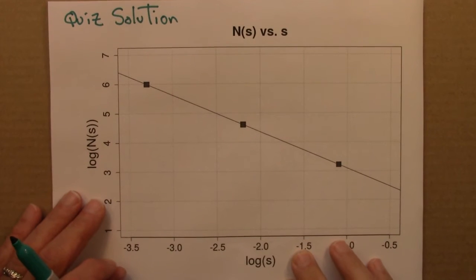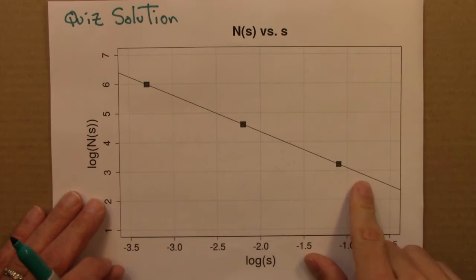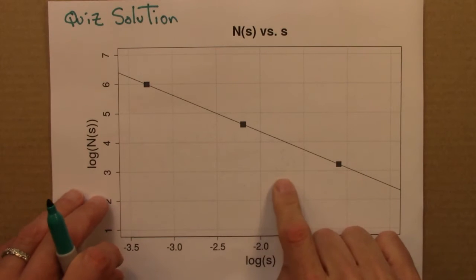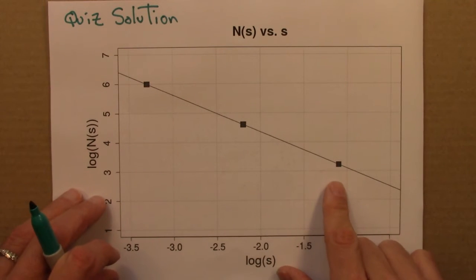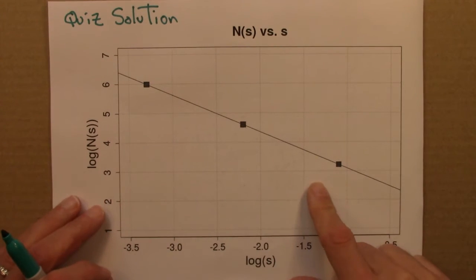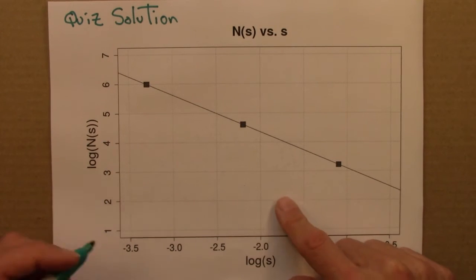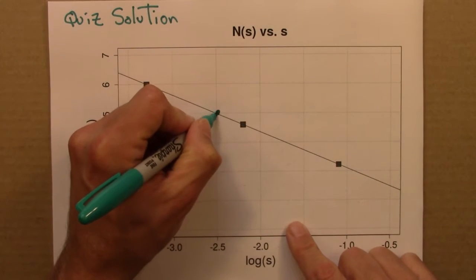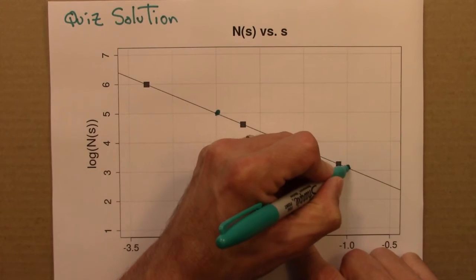So here is a solution to the quiz. We need to find the slope of this line. And to do so, we have to choose two points on the line. We're free to choose whatever points seem convenient. I'm going to choose this point and that point.